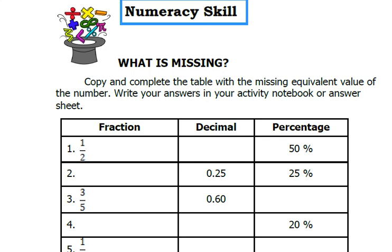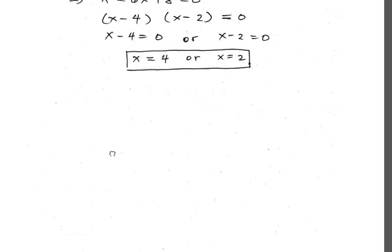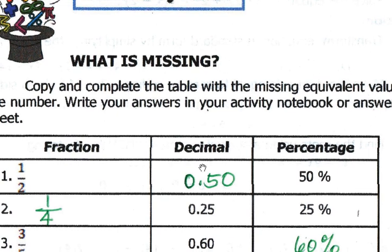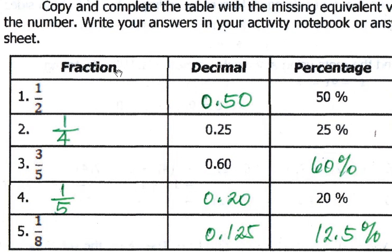We now answer the numeracy skill by completing a table of fractions, decimals, and percentages. One half equals 0.50 equals 50%. One fourth equals 0.25 equals 25%. Three fifths equals 0.60 equals 60%. One fifth equals 0.20 equals 20%. One eighth equals 0.125 equals 12.5%. That completes our solution for this module.